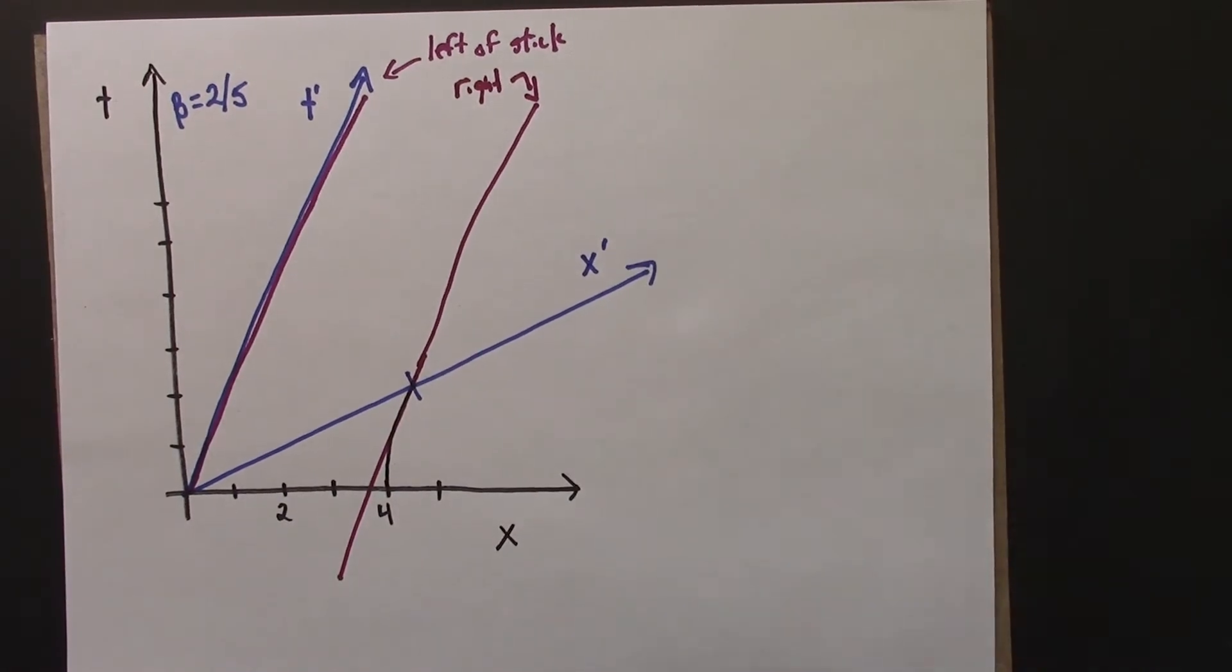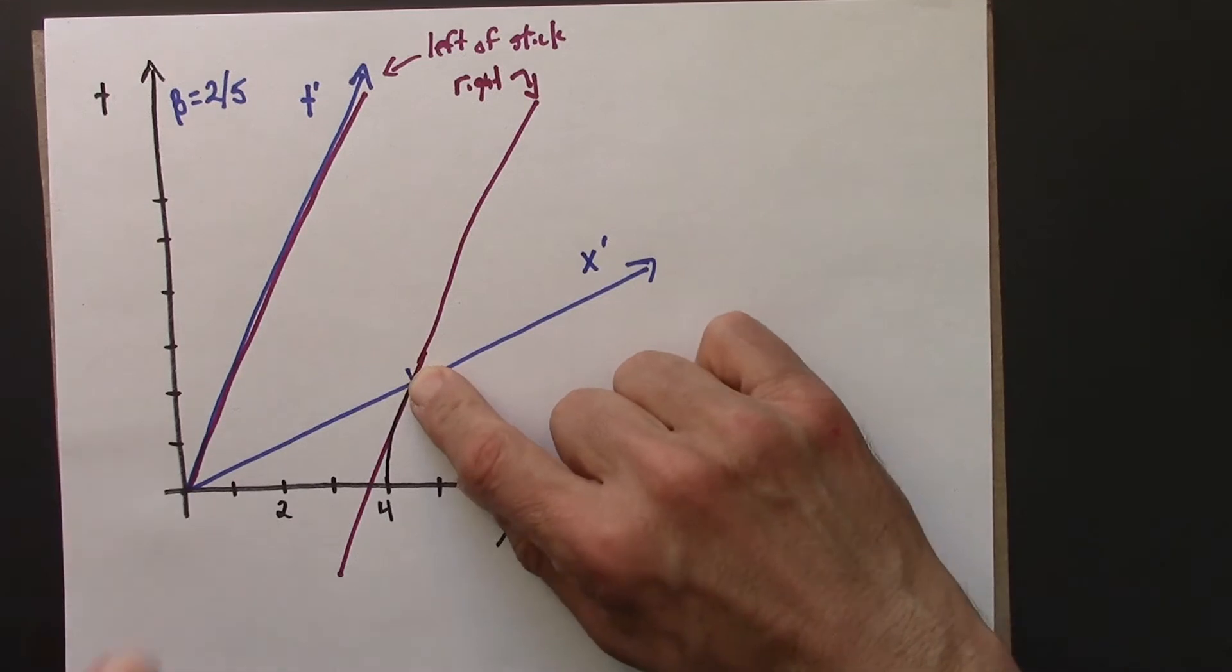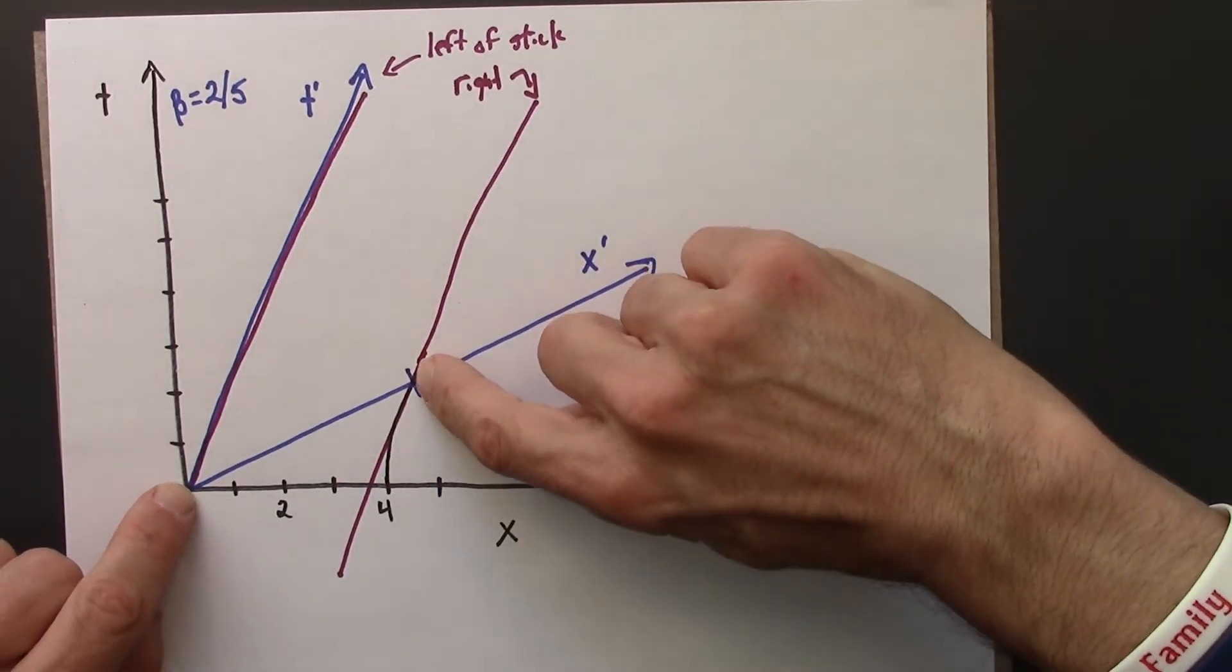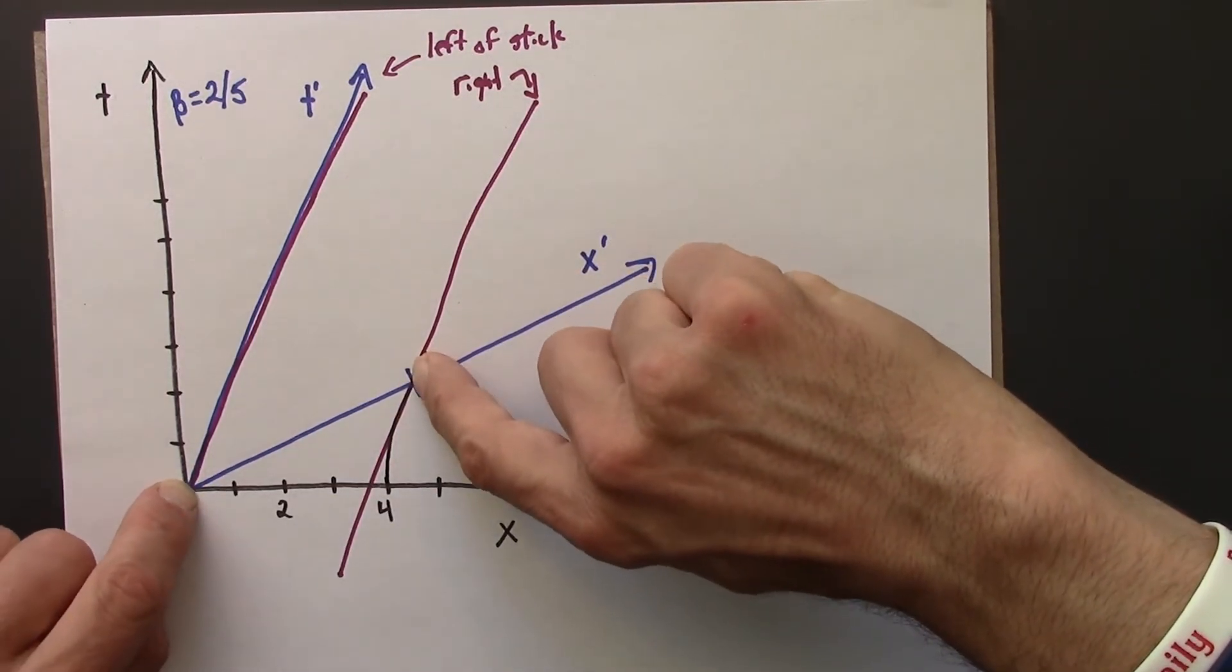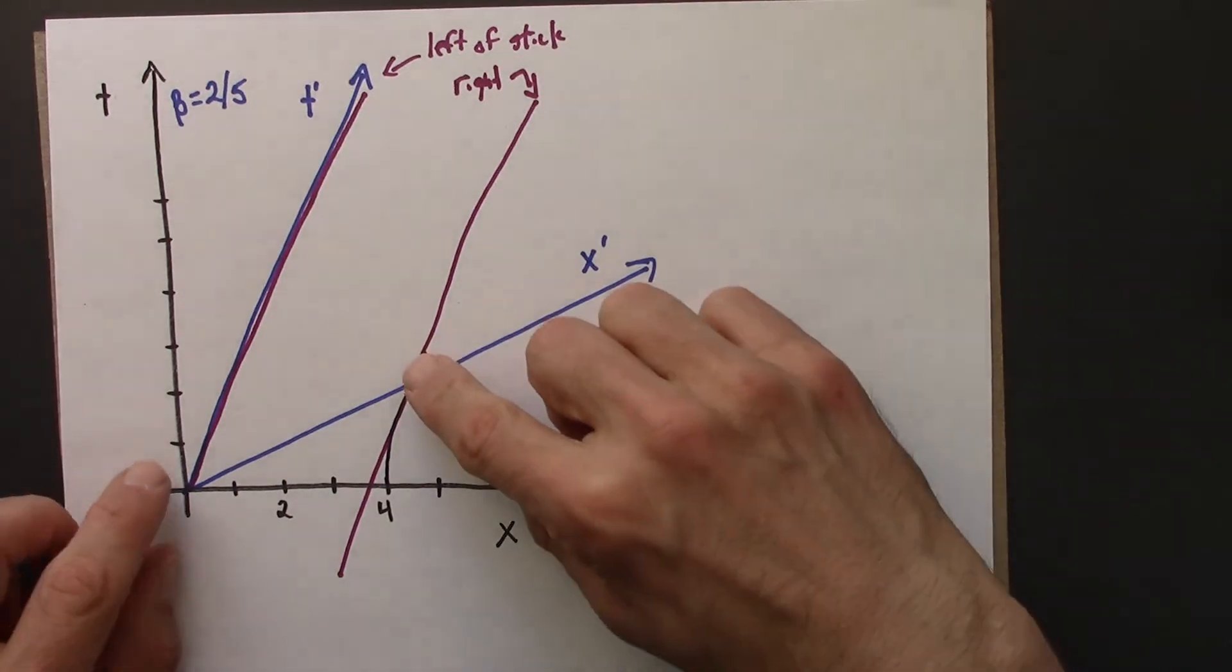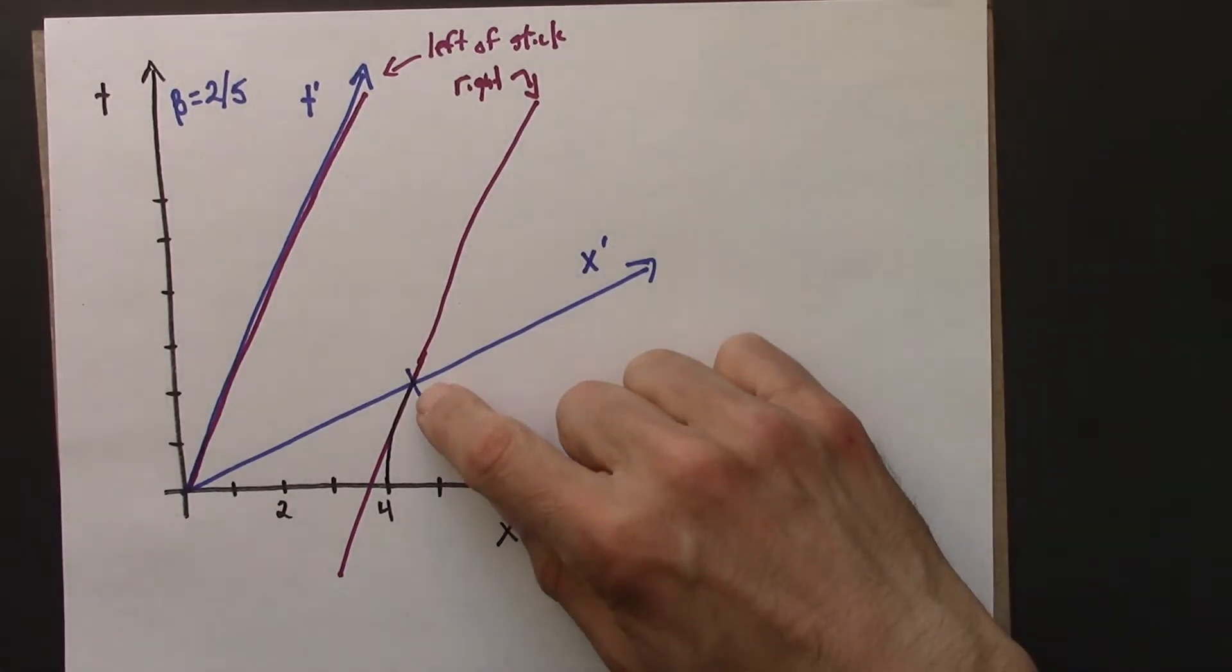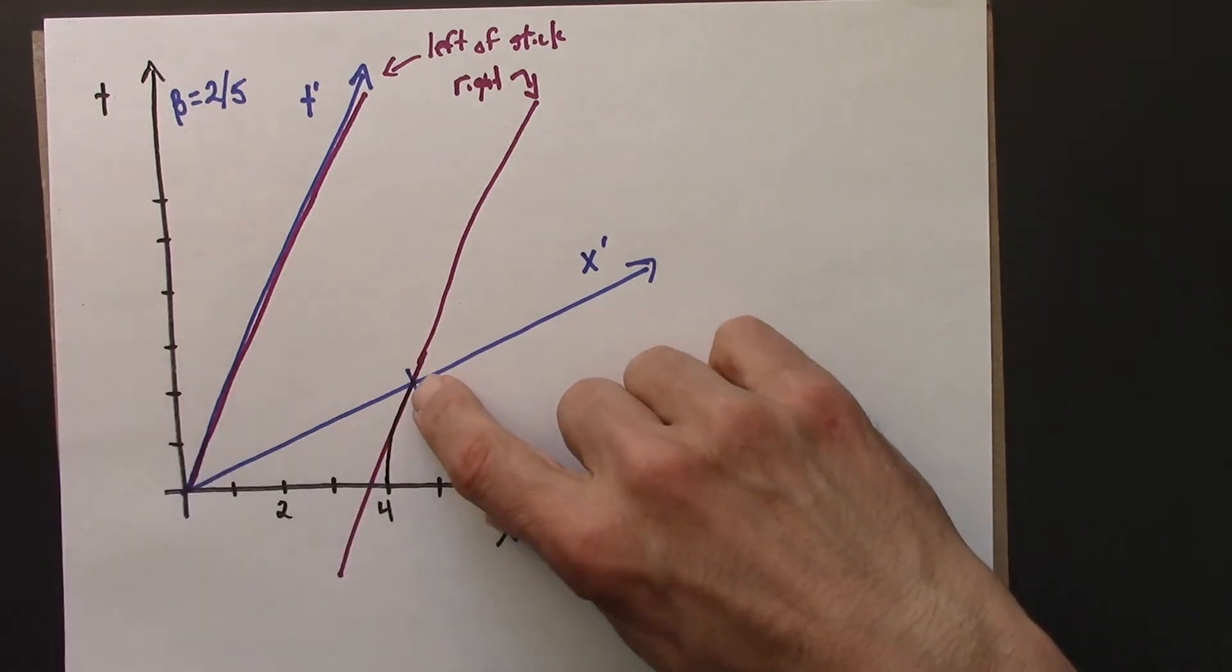So again, let me just say why that is. We know the stick has length 4 in Beowulf's frame. And we have to do this calibration business to figure out where 4 is on the x primed axis. So let's see, let me do one thing that will be useful for later.